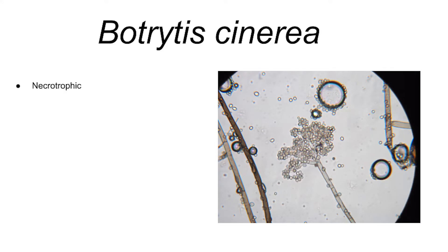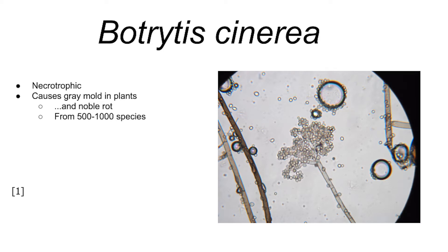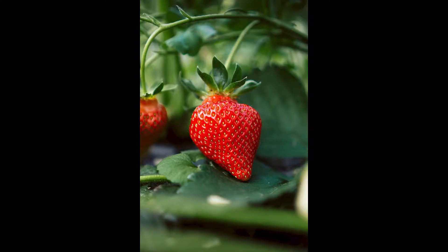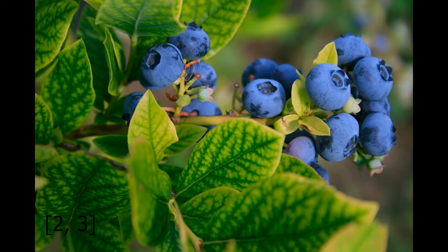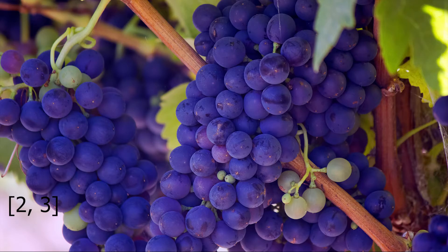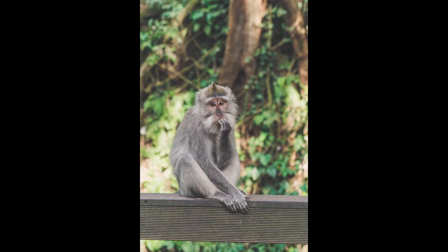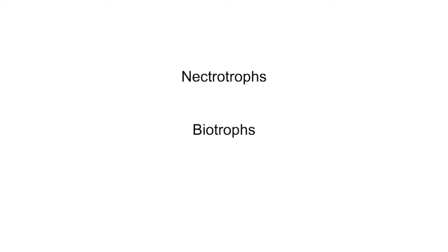Botrytis cinerea is a necrotrophic plant pathogen and the causative agent of gray mold and noble rot in anywhere from a few hundred to a thousand species, including strawberries, blueberries, and grapes. There are necrotrophs and biotrophs, making their pathogenicities completely different. This isn't the end-all be-all of fungal pathogens, but it's a good delineation.